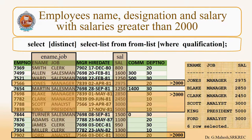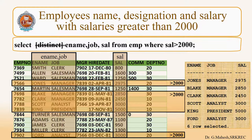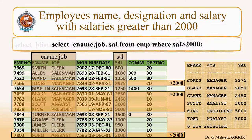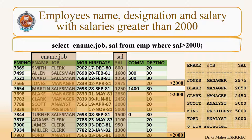Let us see employee name, designation, and salary with salaries greater than 2000. Here the condition is SAL > 2000, and they have to display ENAME, JOB, and salary of the employees. The results will be the intersection of columns and rows, as demonstrated in the PPT.